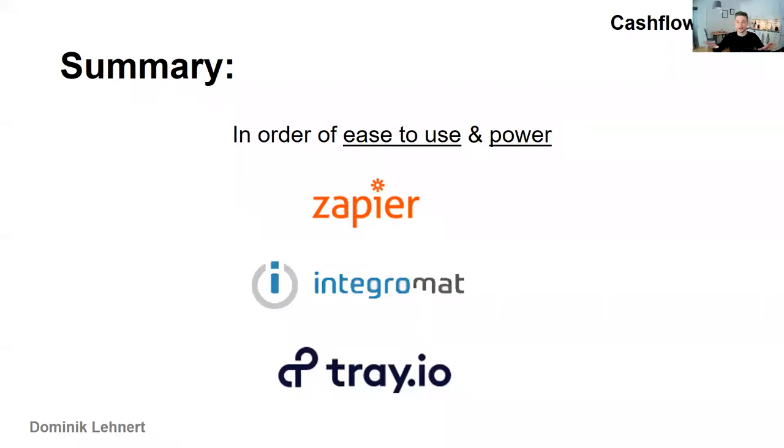There are a lot of solutions out there that help you automate these tasks. Today we're going to look at three of them: the first one is Zapier, the second is Integromat, and the third is Tray.io. If you're just interested in which one is the best solution for you, I'm going to start with that right away. This is the summary at the beginning.